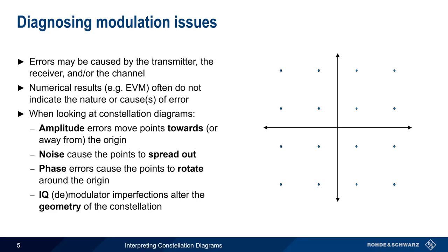And finally, imperfections in the IQ modulator or demodulator can alter the geometry of the constellation. In the remainder of this presentation, we'll look at each of these types of impairments and how they can be identified using constellation diagrams.